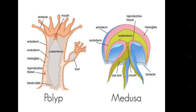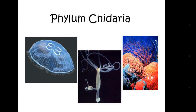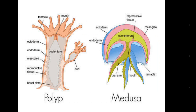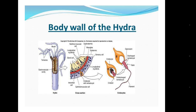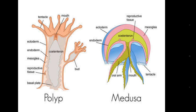These animals can reproduce by creating a bud in their body — when the bud detaches from the mother body, it becomes a newly developed organism. The body cavity is called the coelenteron. These animals have two layers in their body: ectoderm and endoderm. Because they have two germ layers, they are called diploblastic animals.